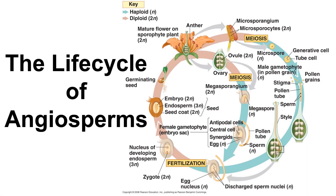The life cycle of the madder family follows the general angiosperm life cycle. This means they are sporophyte dominant, with the diploid mature plant producing haploid gametophytes via meiosis in the anthers and ovules. Once pollination occurs, the sperm fertilizes the egg, and a diploid zygote is produced.